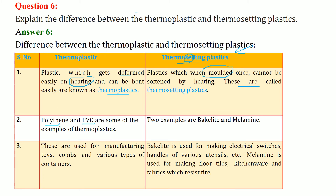Examples of thermoplastics are polythene, PVC (polyvinyl chloride). Examples of thermosetting plastics are bakelite and melamine. Thermoplastics are used for manufacturing toys, combs, and various containers. Bakelite is used for making electrical switches and handles of utensils, while melamine is used for making floor tiles, kitchenware, and fire-resistant fabrics.